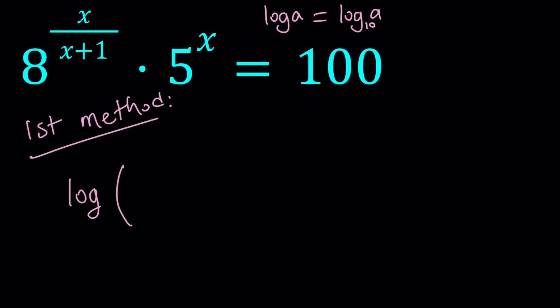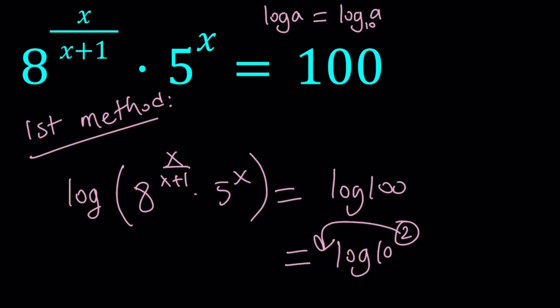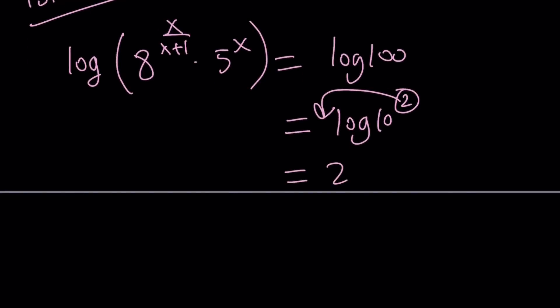Log of 8 to the power x over x plus 1, times 5 to the x, equals log 100. Now 100 is 10 to the second power, so we can move this 2 to the front — giving us 2 times log 10 — and log 10 equals 1 because it's log base 10 of 10. So the right-hand side equals 2.